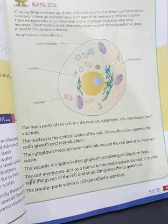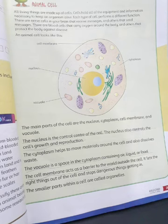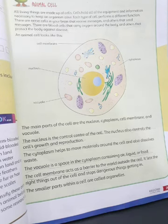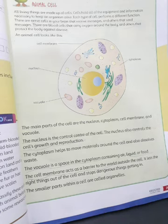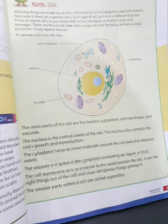Oxygen and nutrients are allowed in by the cell membrane, while waste products like carbon dioxide are pushed out. The cell membrane controls what moves in and out of the cell.